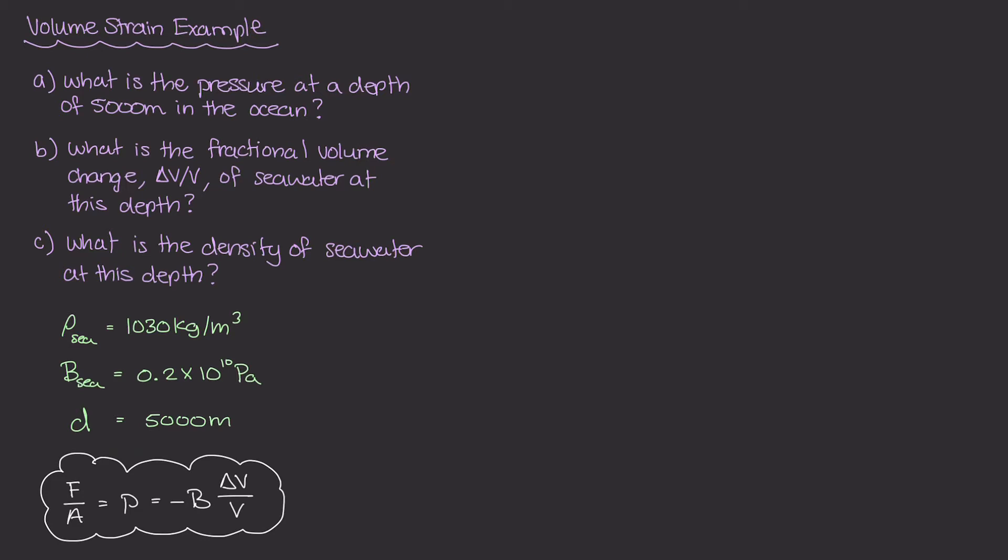With part A, it's asking us what is the pressure at the depth of 5,000 meters. We know how to calculate pressure at this point, we can use our hydrostatic pressure equation, which is p equals p-naught plus rho g d, where d is our depth. Because the top of the ocean is open just to the atmosphere, we can take p-naught to be our atmospheric pressure. So p-naught is 101,300 pascals